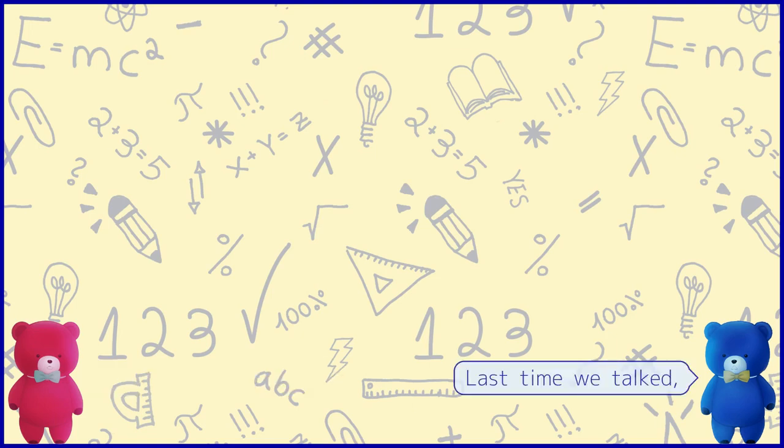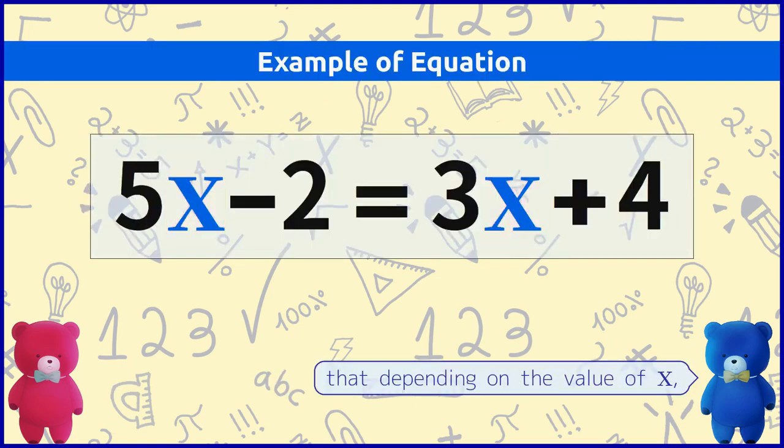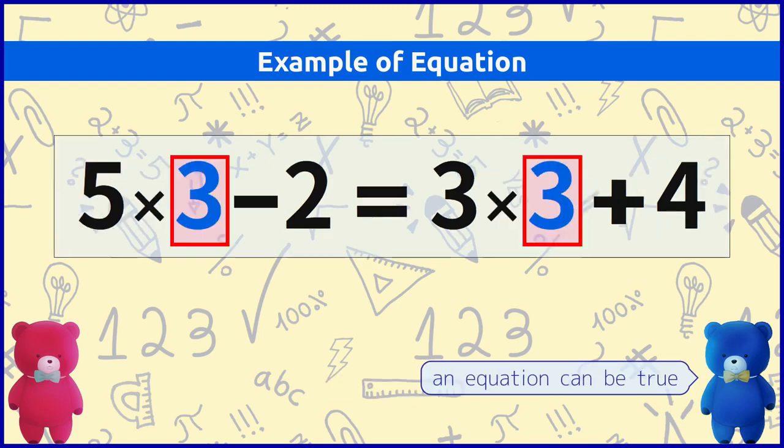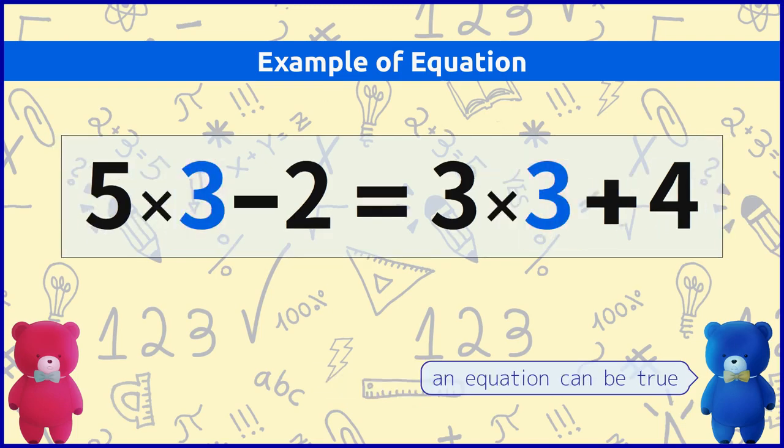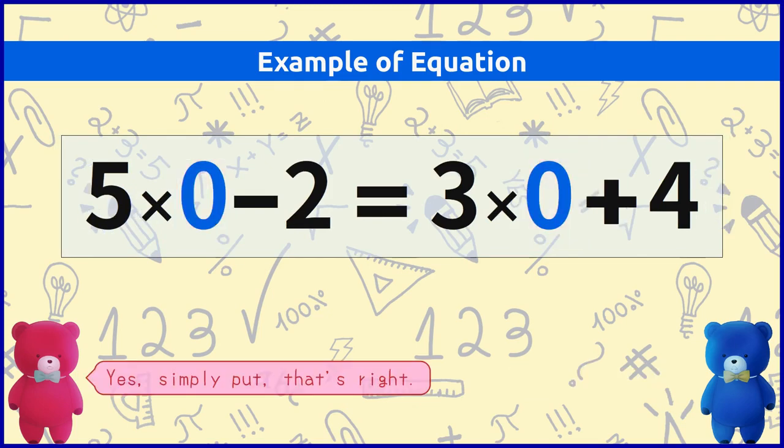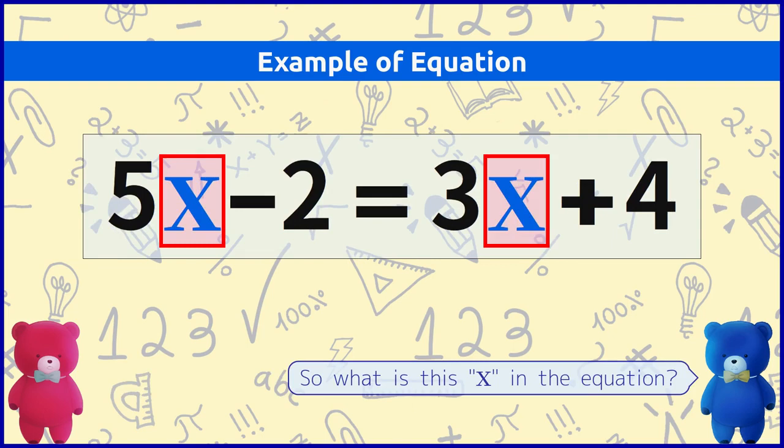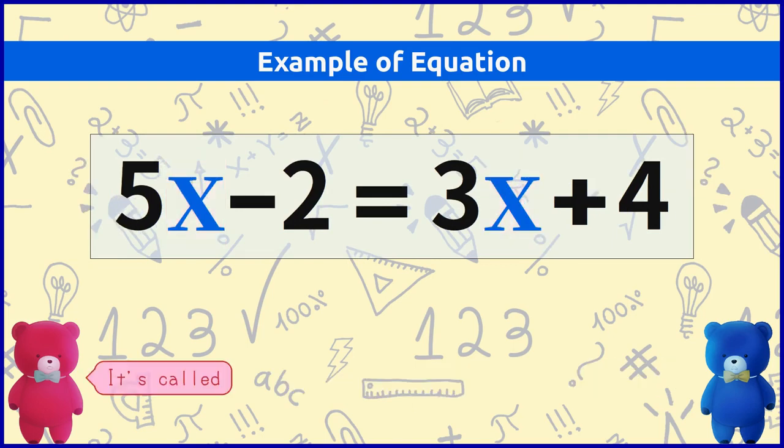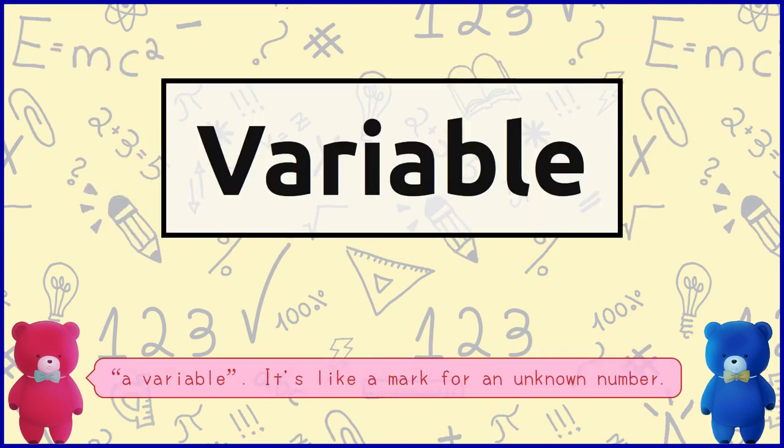Last time we talked that depending on the value of x, an equation can be true or false right. Here's simply put that right. So what is the x in the equation? It's called a variable.